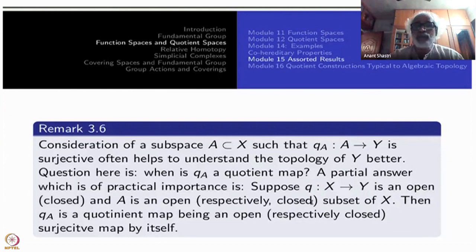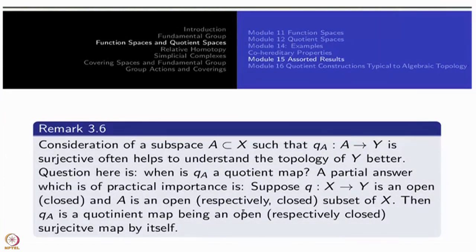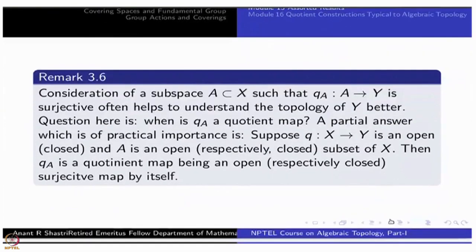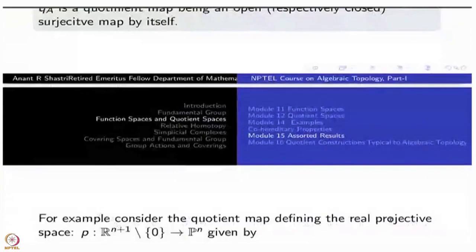Why it happens? It is very easy because if Q is an open map and A is an open subset, then Q restricted to A will be also an open map. Similarly, if A is closed set and Q is closed map, restriction map will be also closed map. And open surjections or closed surjections are automatically quotient maps. We have already noted this one.